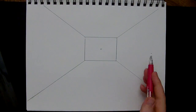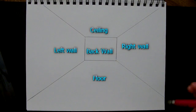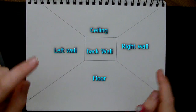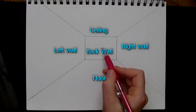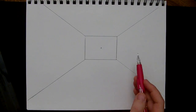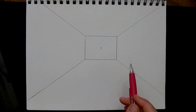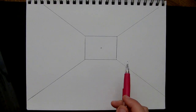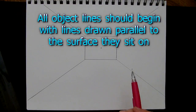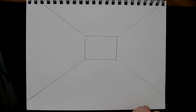This gives us a back wall for our room. It gives us our ceiling, our walls, our floor, and our vanishing point. Whenever we're drawing things in this room, we want to pay attention to what surface they tend to sit on or be installed upon. Let's start with a very basic object that a lot of rooms have, and that's a window.